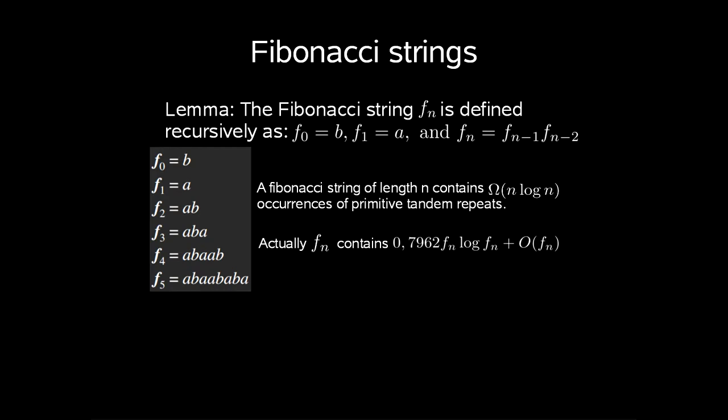Crochemore's algorithm finds all occurrences of primitive tandem repeats in the string from 1 to n in time O(n log n). So no string of length n contains more than O(n log n) occurrences of primitive tandem repeats.